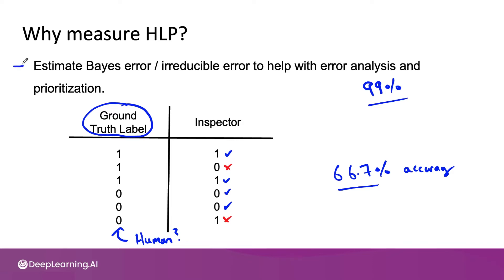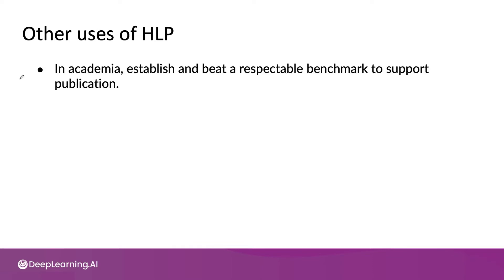Beyond the purpose of estimating Bayes error and establishing what's possible to help with error analysis and prioritization, here are some other uses of human level performance. In academia, HLP is often used as a respectable benchmark. When you establish that people are only 92% accurate on a speech recognition dataset, and if you can beat human level performance, that helps you prove that your learning algorithm is doing something hard and helps get the paper published. Showing you can beat HLP, maybe for the first time, has been a tried and true formula for establishing the academic significance of a piece of work.